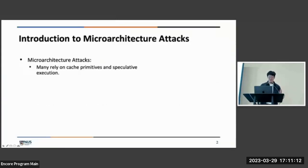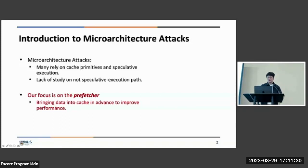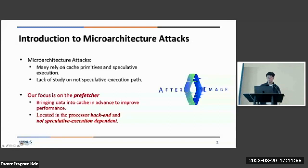Microarchitecture attacks, as many people know, many of them rely on the cache primitives or speculative execution. But we haven't seen many works on non-speculative execution paths. Thus, in this work, we studied the hardware prefetcher. The prefetcher, as many know, brings data into cache before CPU actually uses it, which can improve the performance. It is located in the backend of the processor and is not reliant on speculative execution. Based on the understanding of a specific prefetcher named IP-stride prefetcher in Intel, we construct AfterImage to leak sensitive information from applications.